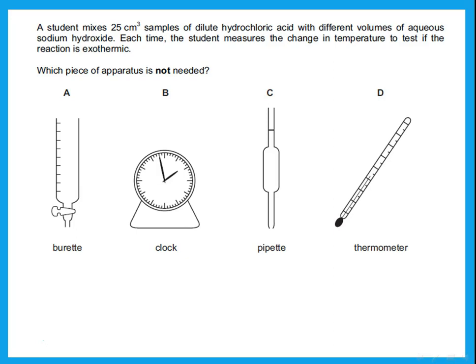For different volumes of aqueous sodium hydroxide, you would use a burette — that's what a burette is used for. The student measures change in temperature, so a thermometer is needed. The phrase 'each time' refers to each experiment, not measuring time — so a clock is not needed. The answer is the clock.